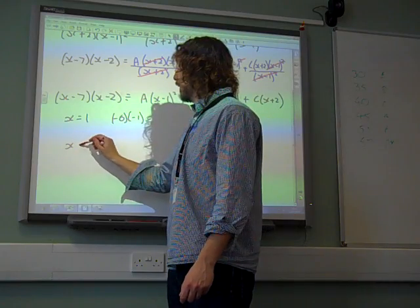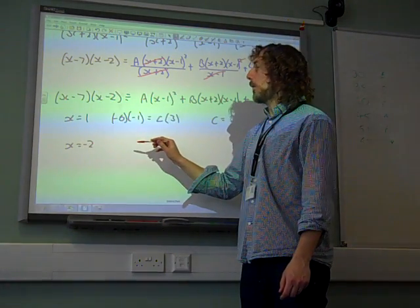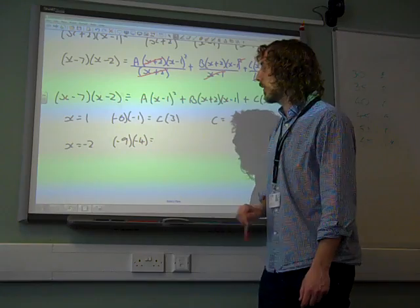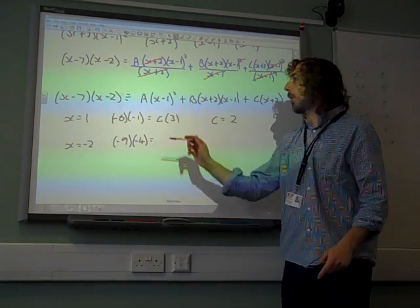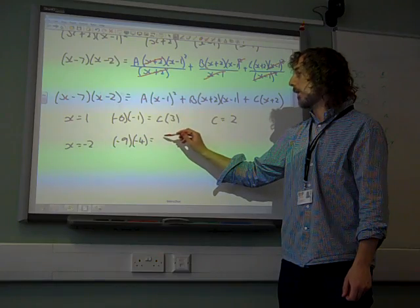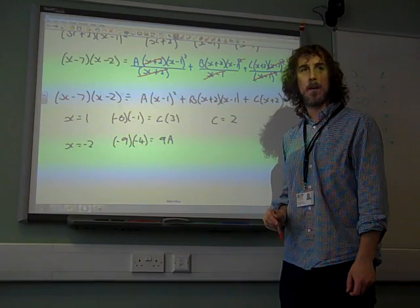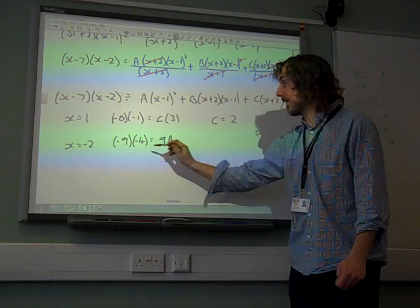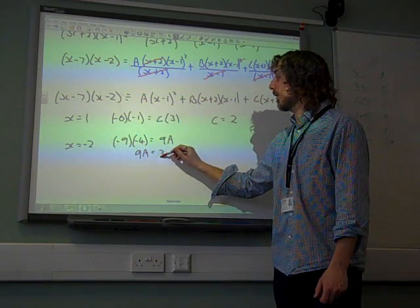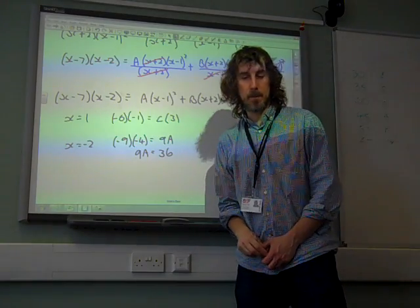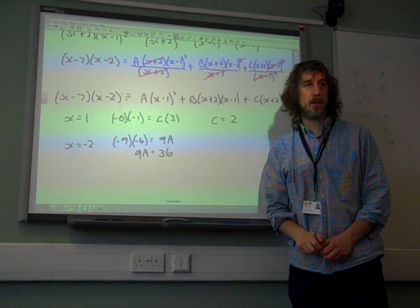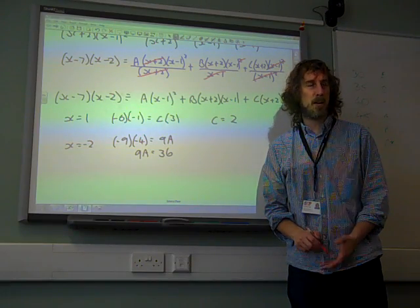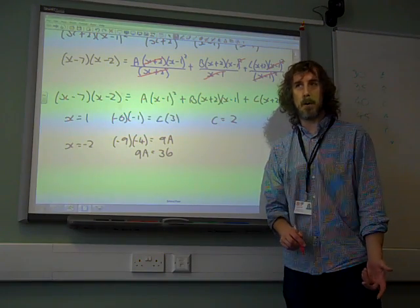We then put in x equals minus 2, and we get minus 2, that's minus 9, times negative 4. Now this time, put in minus 2, and we've got minus 2, take a look at 1, which is minus 3 squared. So we've got 9a out of that. We've then got no b's, because the x plus 2 bracket is there. And that means that 9a is 36. And when I did this, I spent a long time on this question, because I got an answer. And it just didn't feel right to me. And I tried sub in a few values to check if it was right, and it wasn't. And it took me ages to spot the mistake.